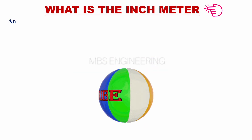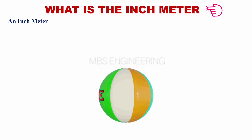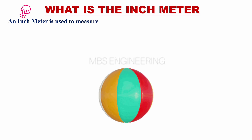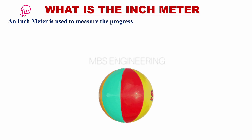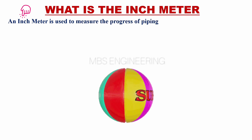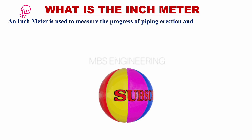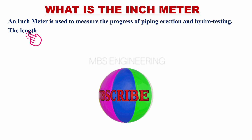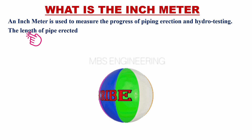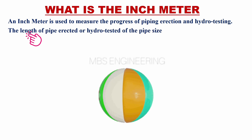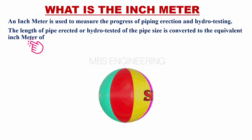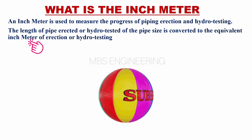We will learn the inch meter. An inch meter is used to measure the progress of piping erection and hydro testing. The length of pipe that is erected or hydro tested at the construction site is converted to the equivalent inch meters for erection or hydro testing.